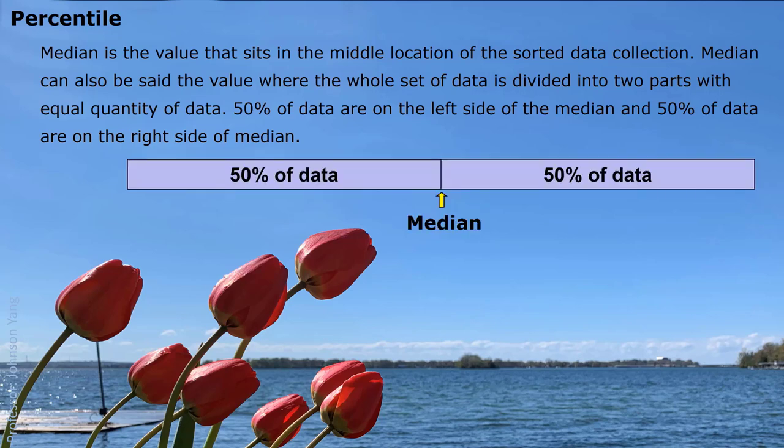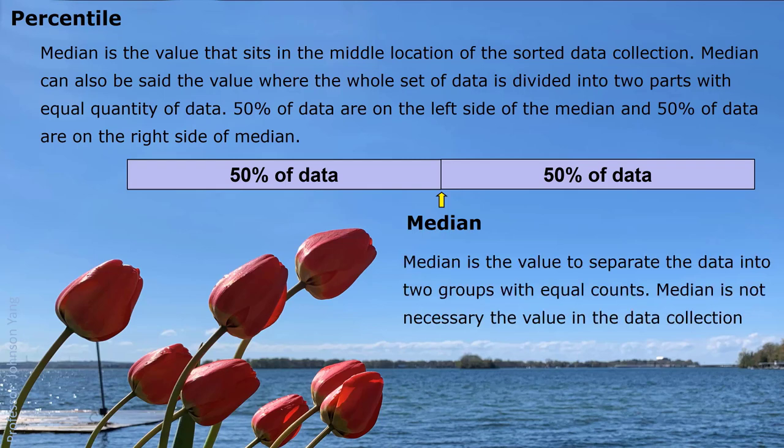Here it is. So, median is the value right in the middle location. Median is the value to separate the data into two groups with equal counts.